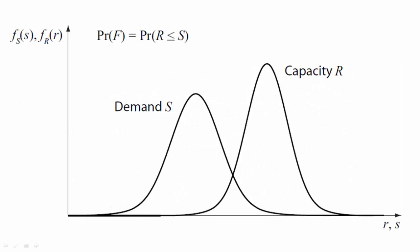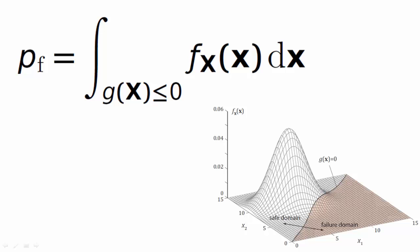For some systems, the failure event can be expressed in terms of demand and capacity of the system. Demand and capacity can, for example, be stated in terms of threshold displacements, allowable stresses, or in terms of stability criteria. In this case, the probability of failure is defined as the probability that the demand will exceed the capacity. In a general setting, the reliability problem is expressed as a multidimensional integral. The vector x contains the uncertain parameters of the model — for example, the Young's modulus, the Poisson's ratio, or allowable stresses — but x can also contain parameters describing uncertainty in the loading. f(x) is the joint probability density function of the uncertain parameter vector x, and g(x) is the so-called limit state function.